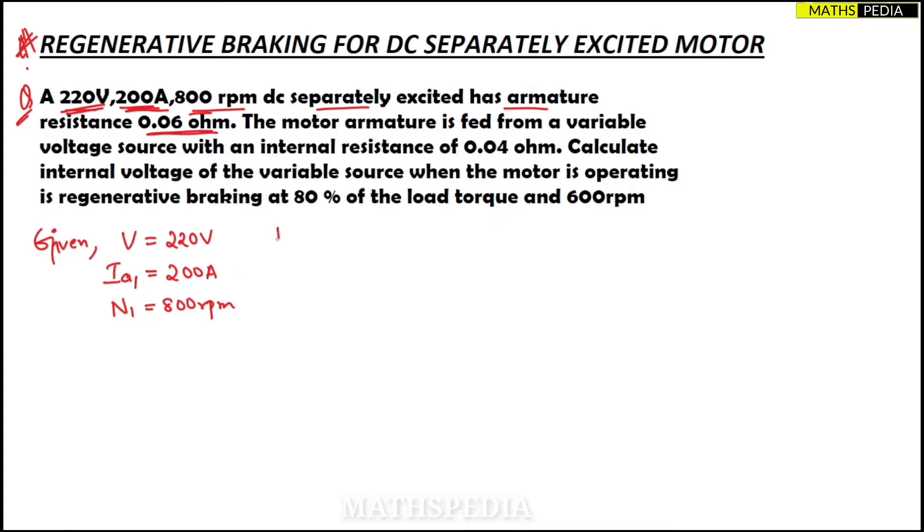Next, armature resistance is given, that is Ra. Ra is armature resistance = 0.06 ohms. The armature is fed from a variable voltage source with an internal resistance, let me name it as Rb.